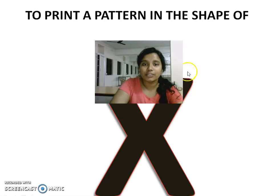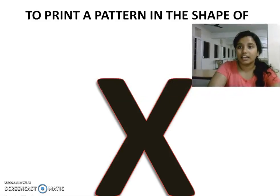For instance, if I need to print something in the form of X, a human being can easily understand what it is and can write anything in the form of X, any alphabet or any number. But how does a computer understand it? That is what the first half of the video deals with.